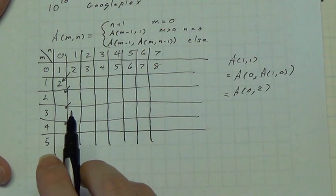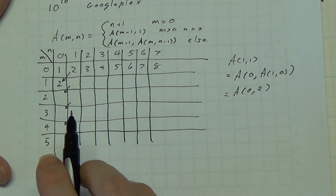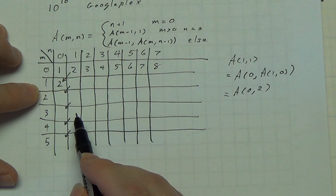what's A, 1, 0? A, 1, 0 is 2, so this is A, 0, 2. And in fact, we can think of, out here in the Ackermann function,